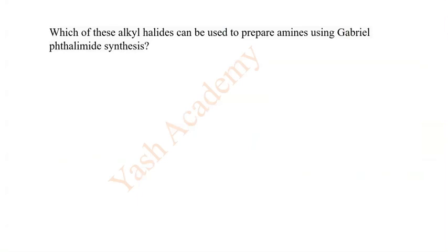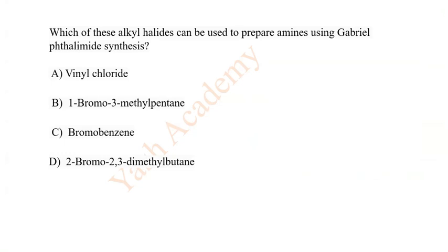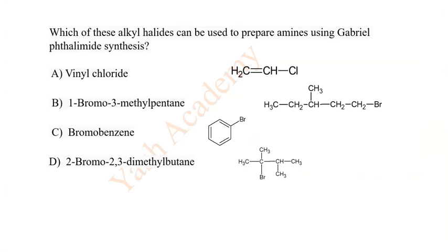Which of these alkyl halides can be used to prepare amines, particularly primary amines, aliphatic primary amines using Gabriel phthalimide synthesis? Options: A vinyl chloride, B 1-bromo-3-methylpentane, C bromobenzene, D 2-bromo-2,3-dimethylbutane. Here structure of vinyl chloride is B.